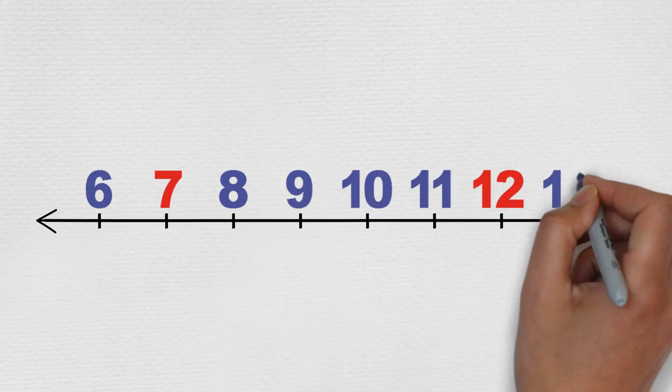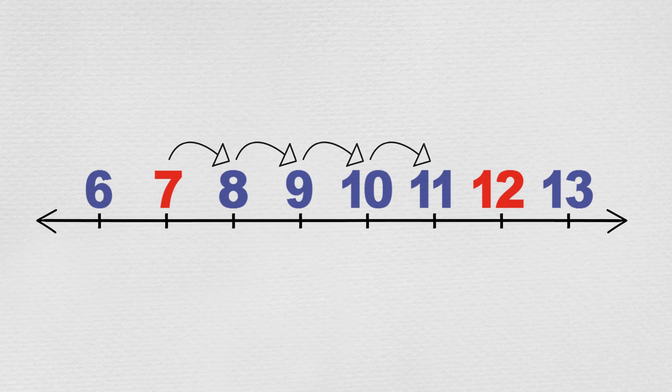See, you can go forward, that is to the right, from 7 to 12 by moving five places. From 7 to 8, from 8 to 9, then on to 10, 11, and finally 12.